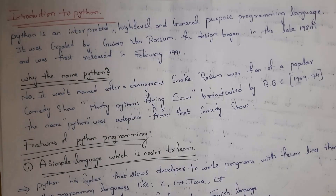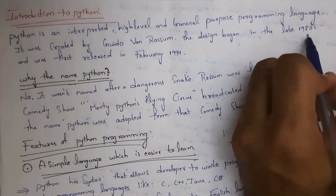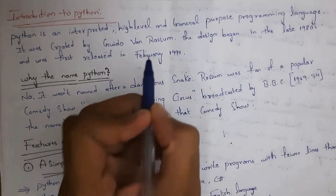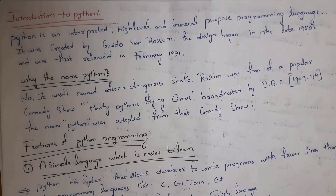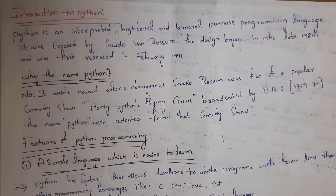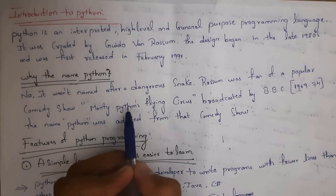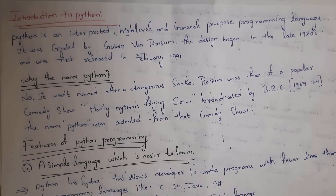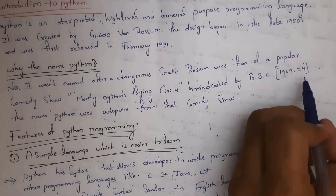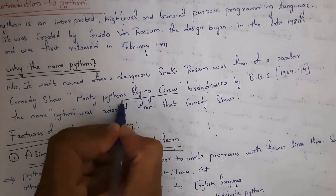Python was created by Guido van Rossum. He started designing Python in the late 1980s and it was first released in February 1991. Many people think the name 'Python' comes from the snake, but actually Rossum was a fan of a popular comedy show called 'Monty Python's Flying Circus', which was broadcast by BBC from 1969 to 1974. The name Python was adapted from that show.